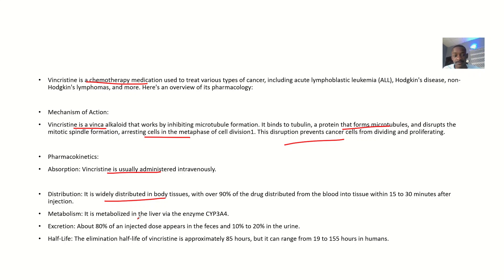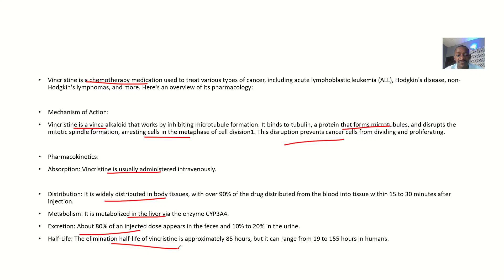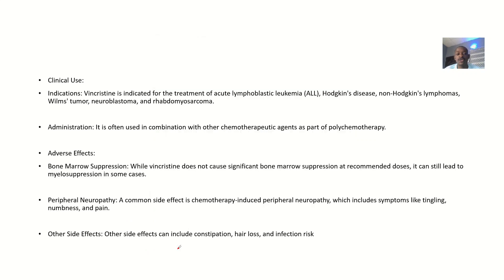Metabolism occurs in the liver via the cytochrome CYP3A4 enzyme. About 80% of the injected dose appears in feces and 10 to 20% appears in urine. The initial half-life of vincristine is approximately 85 hours, but can range from 19 to about 155 hours in humans.